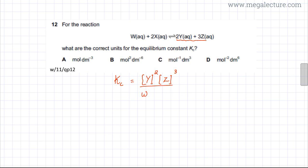In this case, you have the concentration of W, and another reactant which is X. Its concentration, because the coefficient is 2, would be squared. So this is your expression for Kc, and the unit for concentration is mole per decimeter cubed.